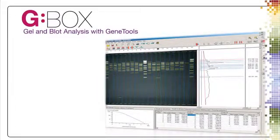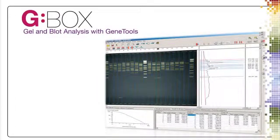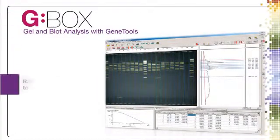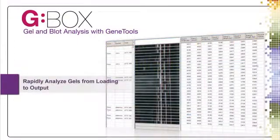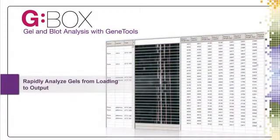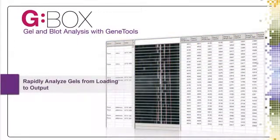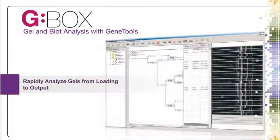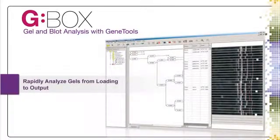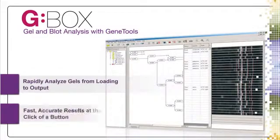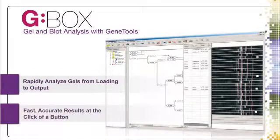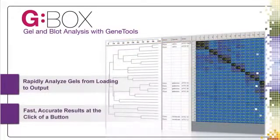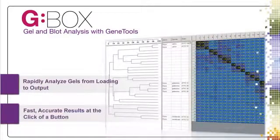Every G-Box comes with our acclaimed GeneTools analysis software. This highly automated software can rapidly analyze a gel from loading to output in a matter of seconds. Simplicity is the key feature of GeneTools, allowing even the most inexperienced user to obtain fast, accurate results at the click of a button and with minimal training.